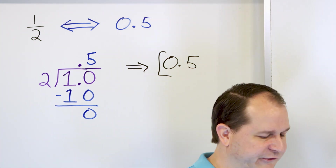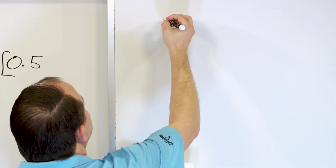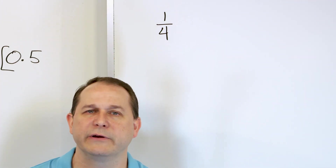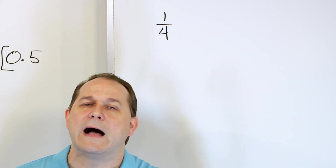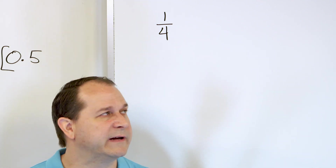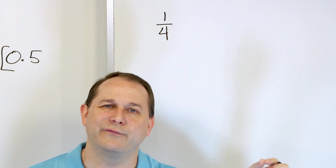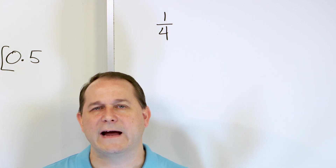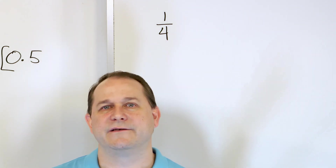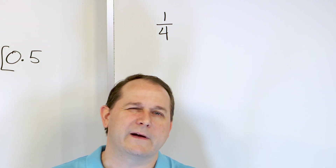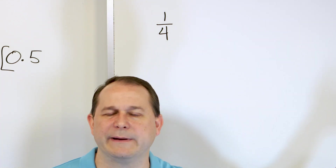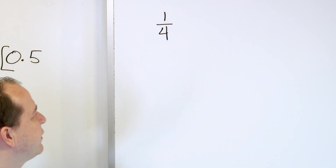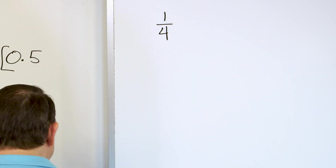Now let me ask you about another fraction. Let's take the fraction 1/4 — it should be familiar to you. Some of you may know the decimal equivalent, and some may not. I'll tell you the decimal equivalent of 1/4 is 0.25. You can also think of it as 25 cents in a dollar, which is 100 cents — so 0.25. We'll get to that a little later, but that's one way you can remember it. Let's see if we can calculate this and verify that it is the case.